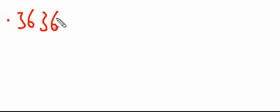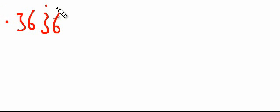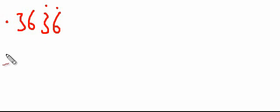In this video we're going to prove that a recurring decimal is equal to a fraction. Let's take the recurring decimal 0.3636 — we put dots to show that it's a recurring decimal. The trick is we let this number equal x.